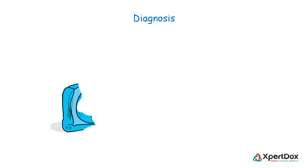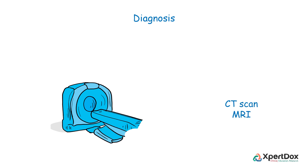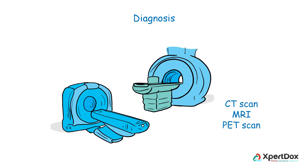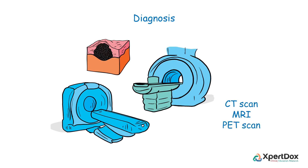Imaging tests, such as CT scan, MRI, and PET scan, may be used to find out if the bladder cancer has spread and to help with staging.